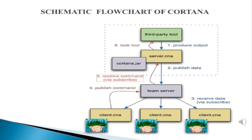Looking at the schematic flowchart of Cortana: a third-party tool is connected to the Cortana server and the team server, where the team server provides data to the client Cortana. The client Cortana receives data from the team server via subscribe, then publishes commands to the team server. The team server publishes data to Cortana via subscribe, receives commands, and then provides output to the user.